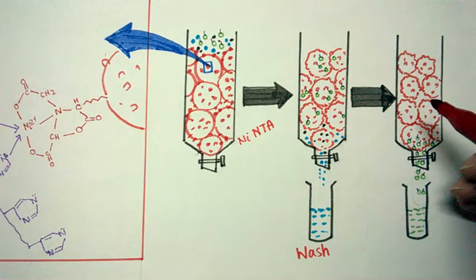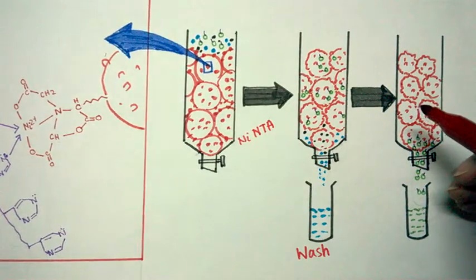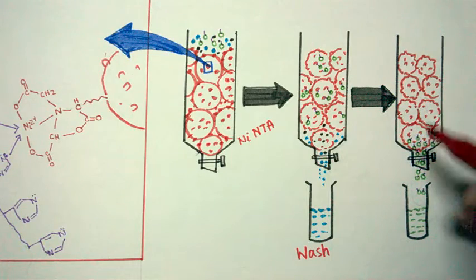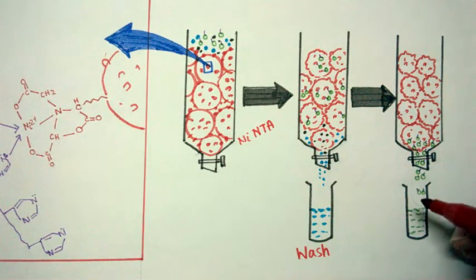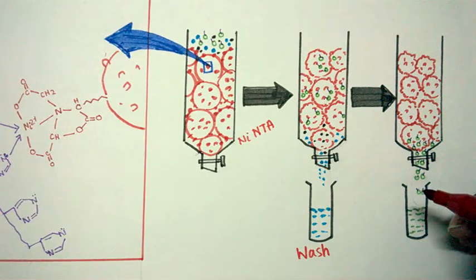In this way the protein containing hexahistidine tag which is bound to the matrix would be released easily. And that is how we would get our protein into the fraction collector. And thus we would get our protein of interest.